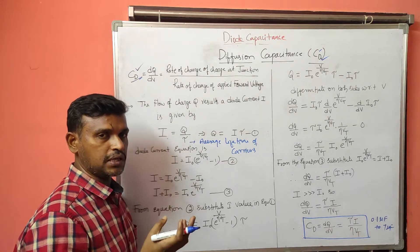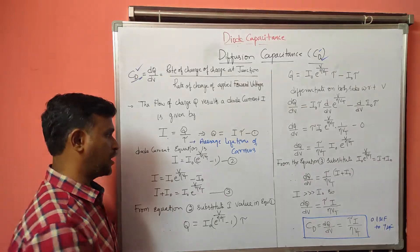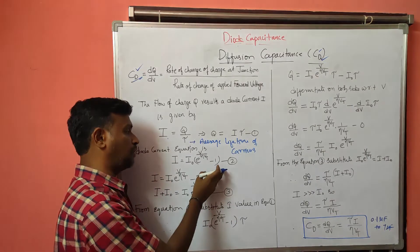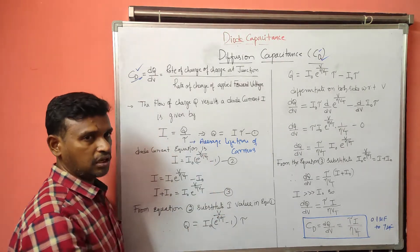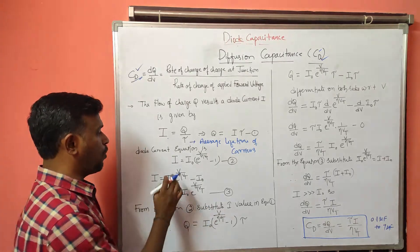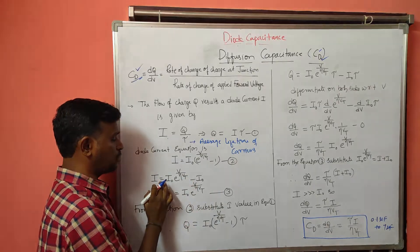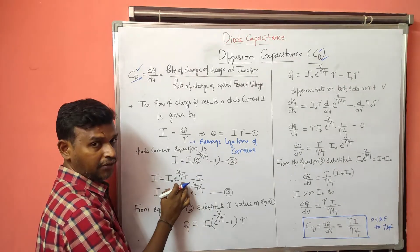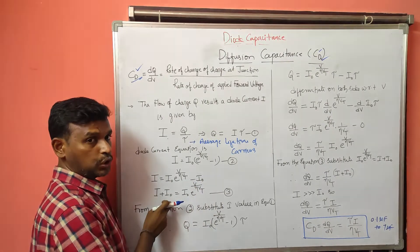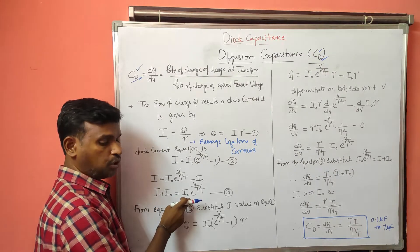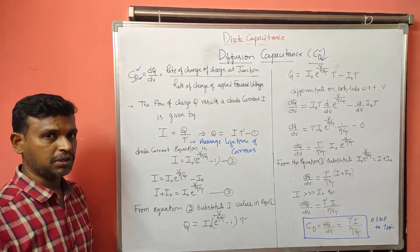We know the diode current equation: I = I₀(e^(V/ηVT) − 1). This is the diode equation derived in previous discussions. Rearranging this, I + I₀ = I₀·e^(V/ηVT), and this is taken as equation number 3.